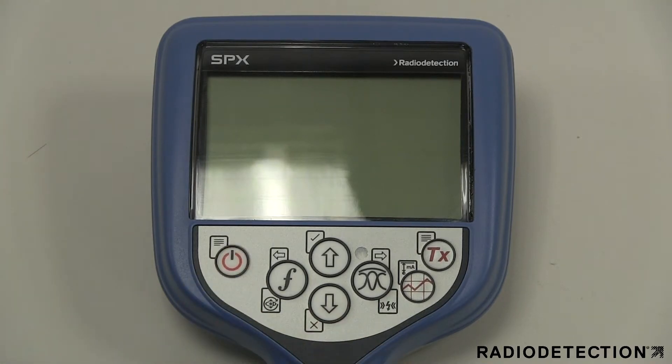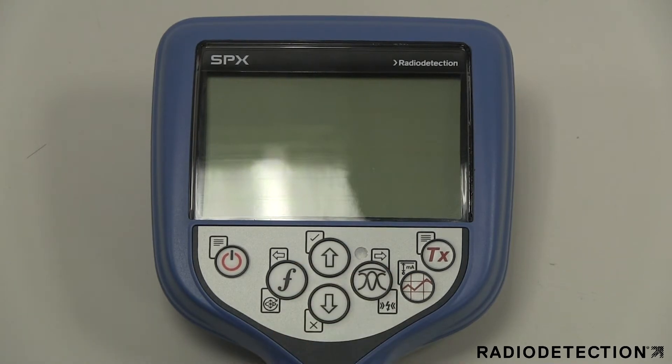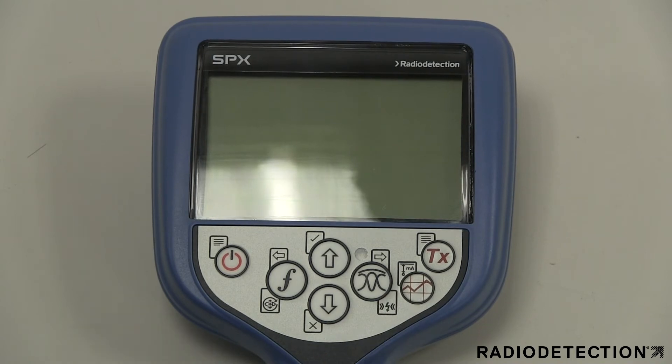The keypad has a power key, a frequency key, up and down arrow keys, antenna key, survey key and the transmitter key.